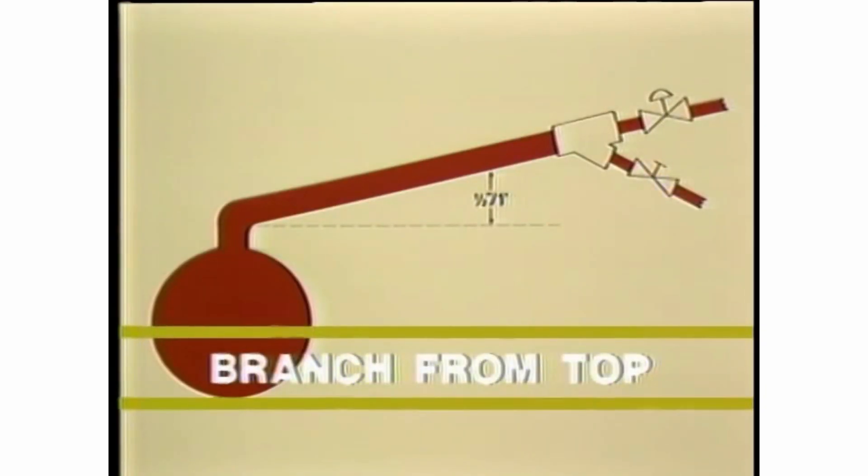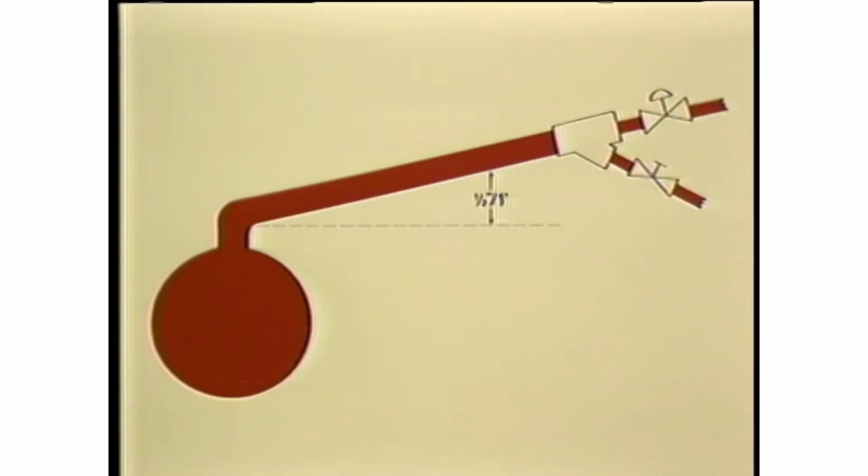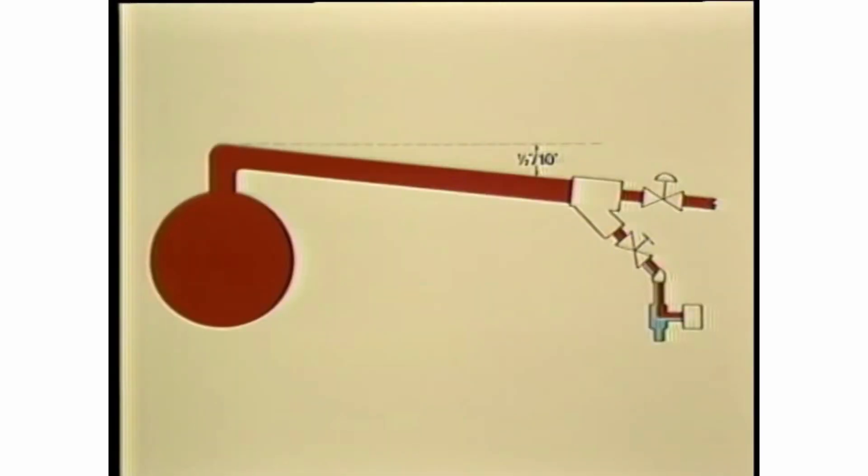Branch piping or run outs from the steam main should always be taken from the top of the main. Run outs of less than 10 feet can be pitched up from the main at one half inch per foot, and do not require a drip trap ahead of a PRV or control valve. If the run out is more than 10 feet, it should be pitched down from the main.